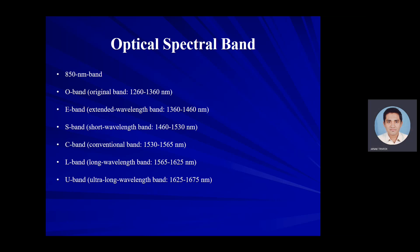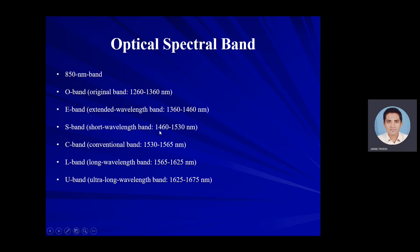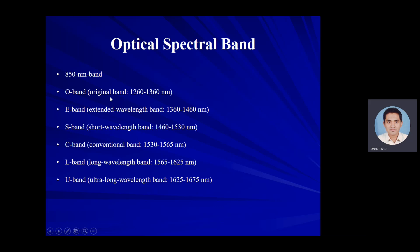The loss of optical fiber in the S band, around 1460 to 1530 nanometer, is lower than that of the O band, and the S band is used for many PON — passive optical network — systems as the downstream wavelength.